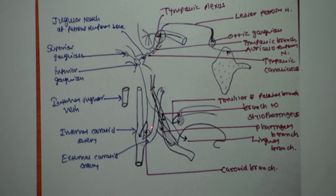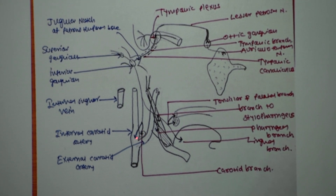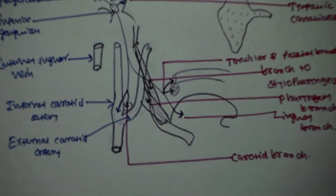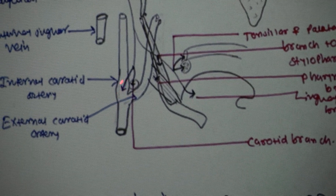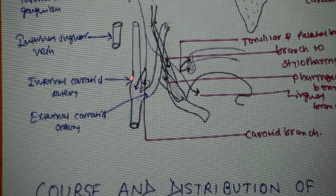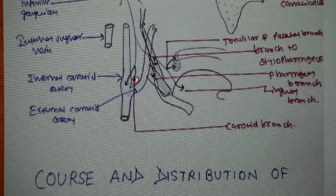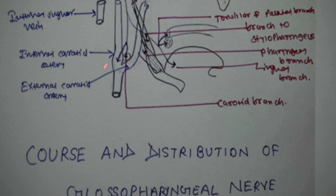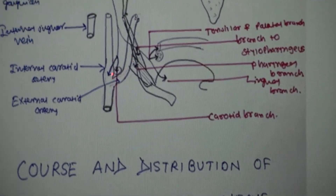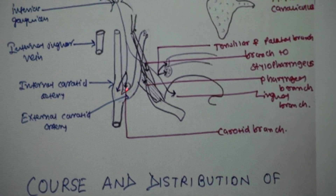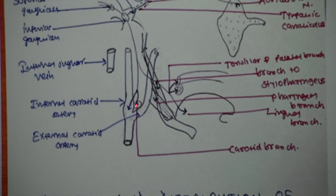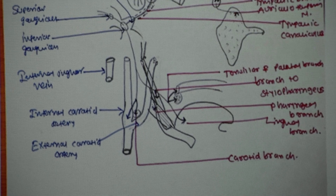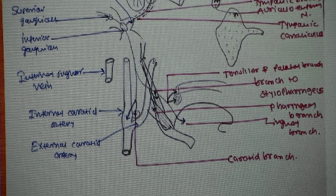It gives terminal branches to the carotid body and carotid sinus. The carotid sinus is the dilatation in the initial part of the internal carotid artery. The carotid body is the glomerular structure at the bifurcation of the external and internal carotid artery. So all these are the branches of the glossopharyngeal nerve.